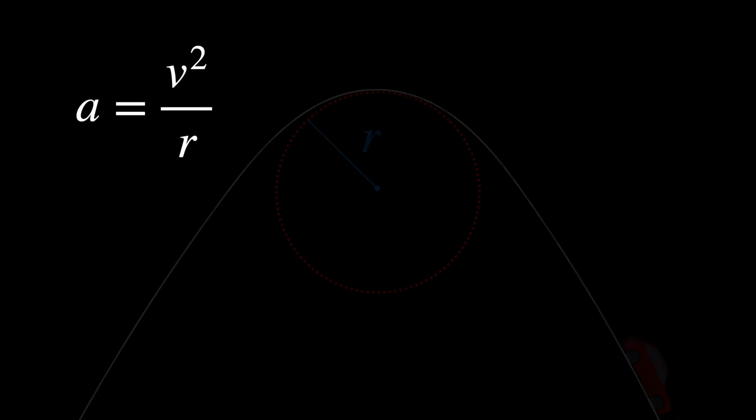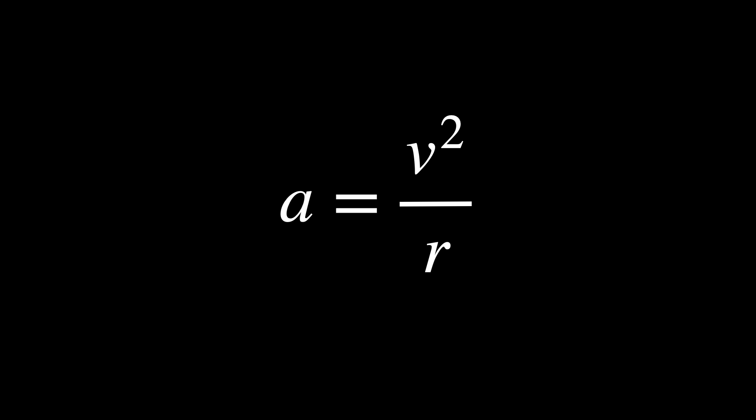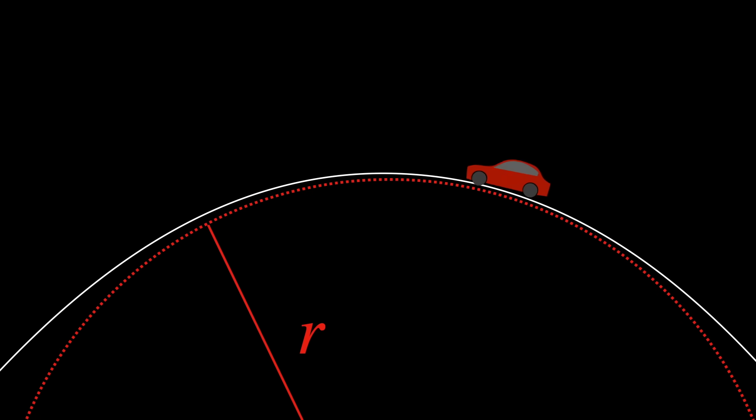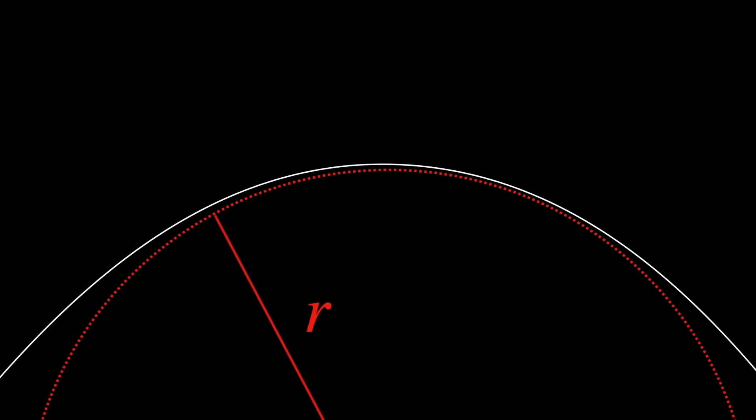Notice how the acceleration and the radius are inversely proportional to each other. So the bigger the radius, the less acceleration is needed. And vice versa.